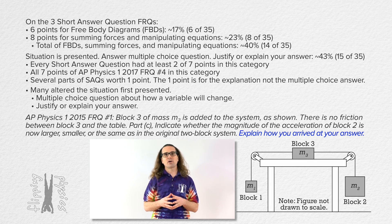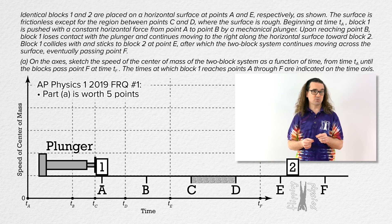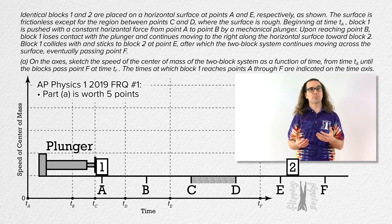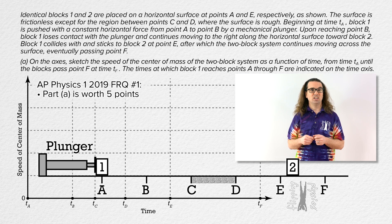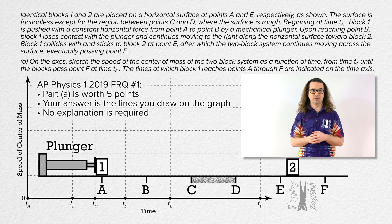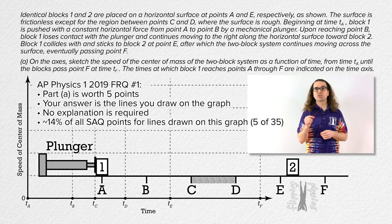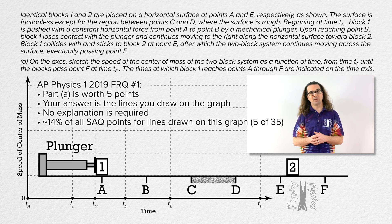The last category I identify is the five points from part A of AP Physics 1, 2019 number 1. Here, they present you with a situation of two objects which collide and ask you to graph the speed of the center of mass of the system as a function of time. Your entire answer to part A is worth five points. Is only the lines you draw on the five parts of the graph, no explanation necessary. 5 out of 35 points, or roughly 14% of all the points on these five short answer questions, are for drawing a graph with no explanation necessary.